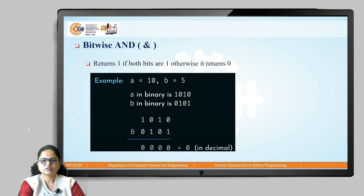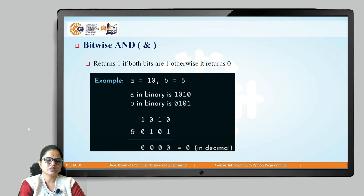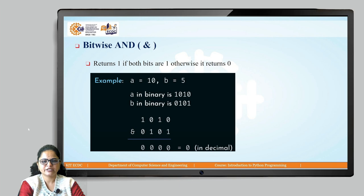Going through the bits: the MSB pair is 0 and 1, so 0 AND 1 is 0. Then 1 AND 0 is 0. Then 0 AND 1 is 0. Then 1 AND 0 is 0. So it results in all 0s, meaning the result of 10 AND 5 is 0. This is the bitwise AND operator — it performs the operation on binary digits.